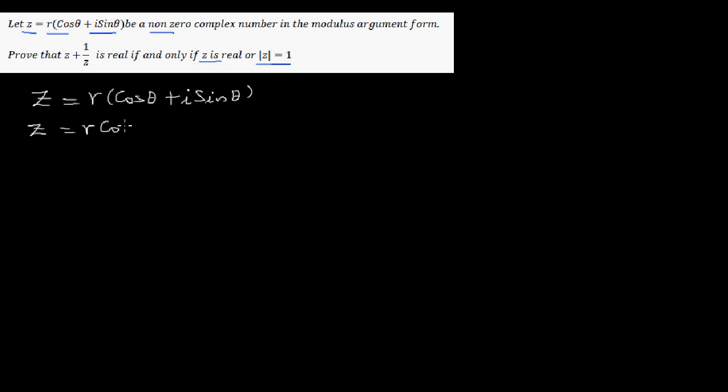Let's write Z as given in modulus-argument form. Z is given to be R cosθ + i sinθ, which expands to Z = R cosθ + Ri sinθ. Now let's take the first condition.